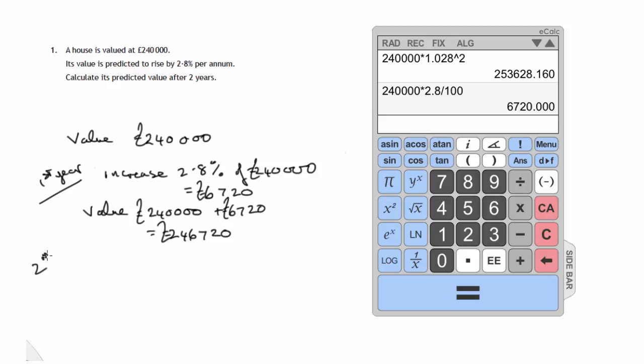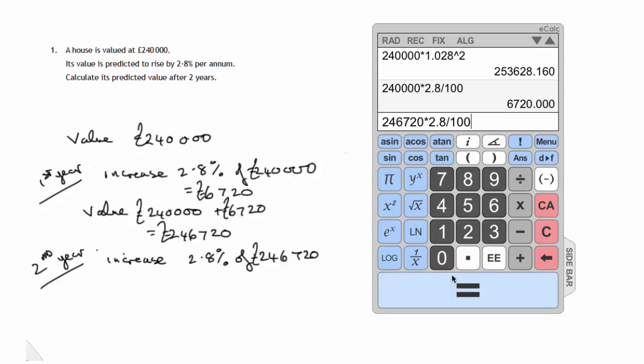And for the second year calculations, that'll be the value we start with. So the increase will be 2.8% of that new value. 2.8% of £246,720, which we can work out here. 246,720 times 2.8% divided by 100. And we get an increase of £6,908.